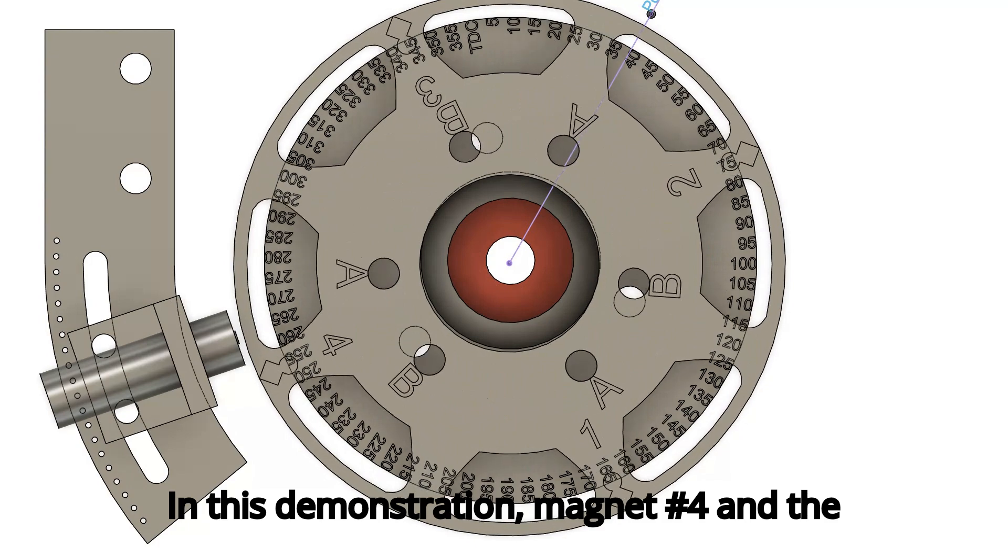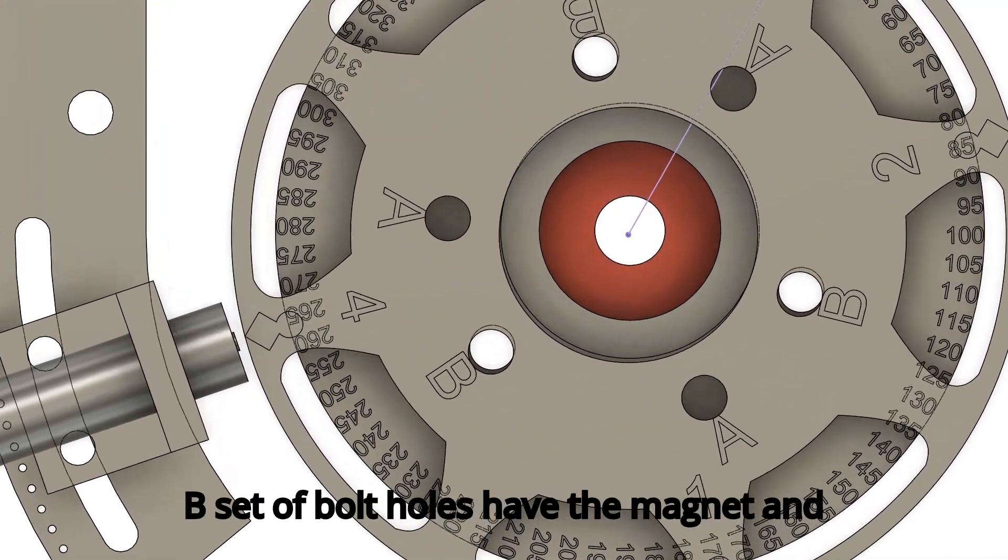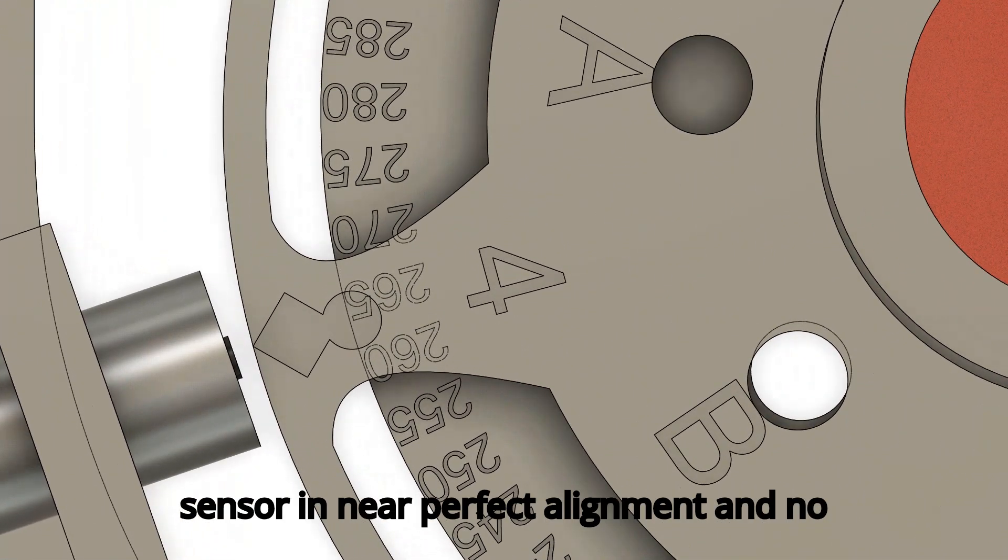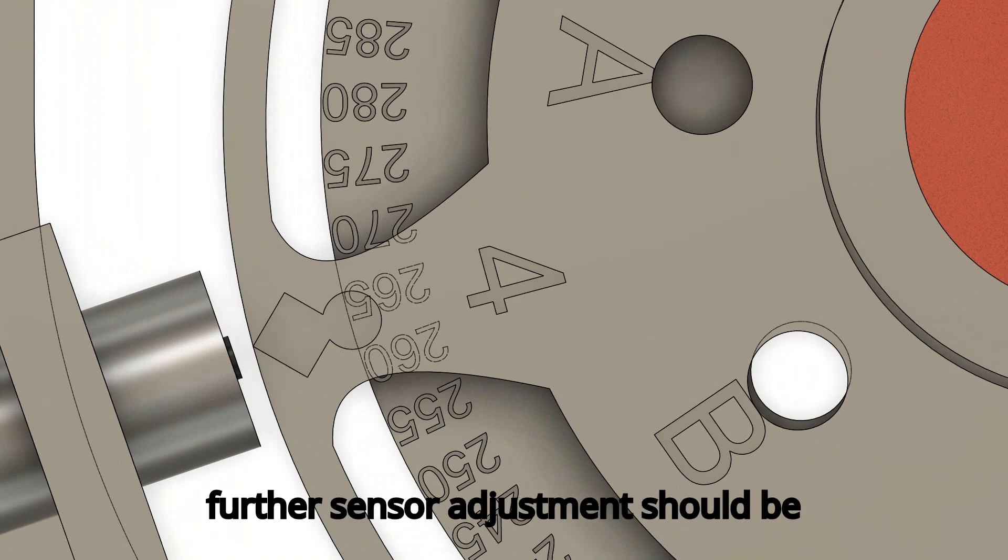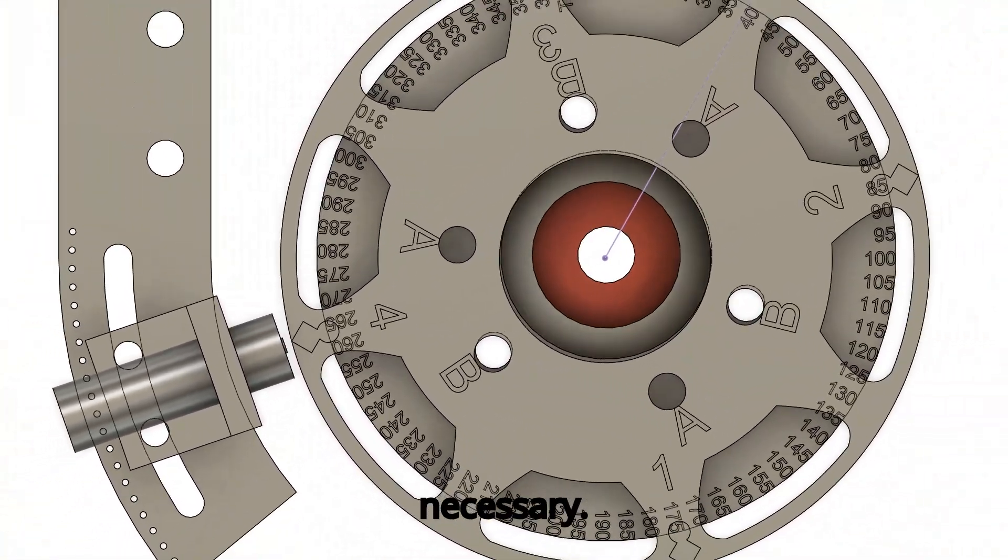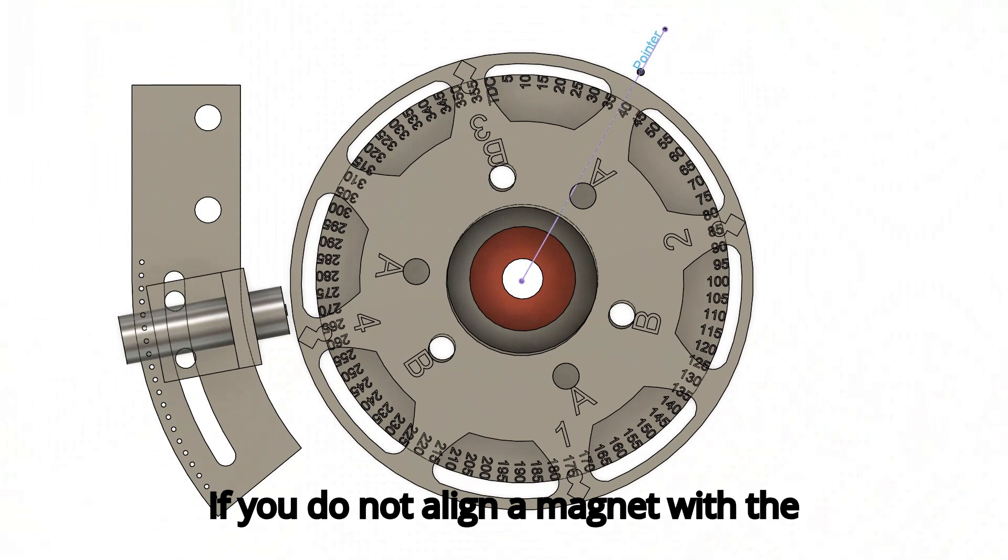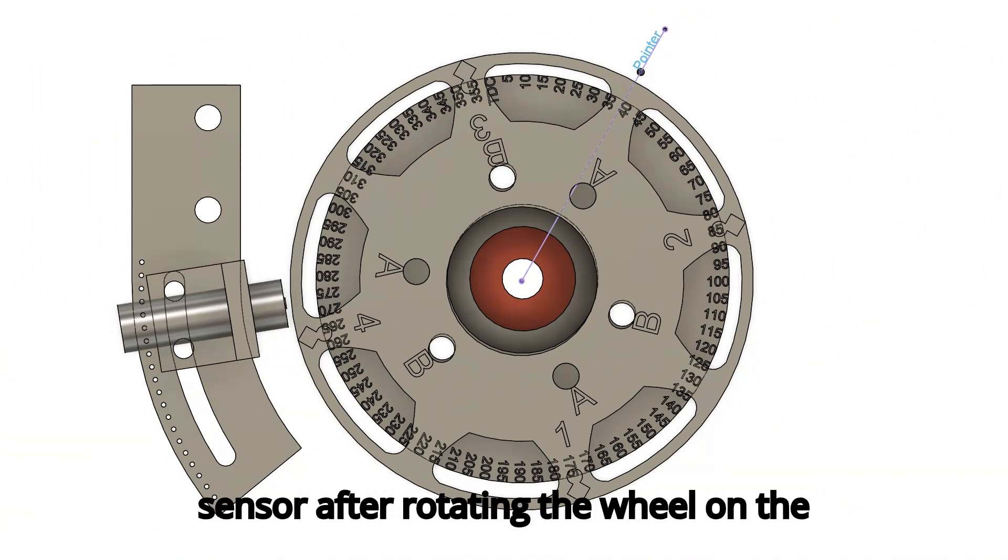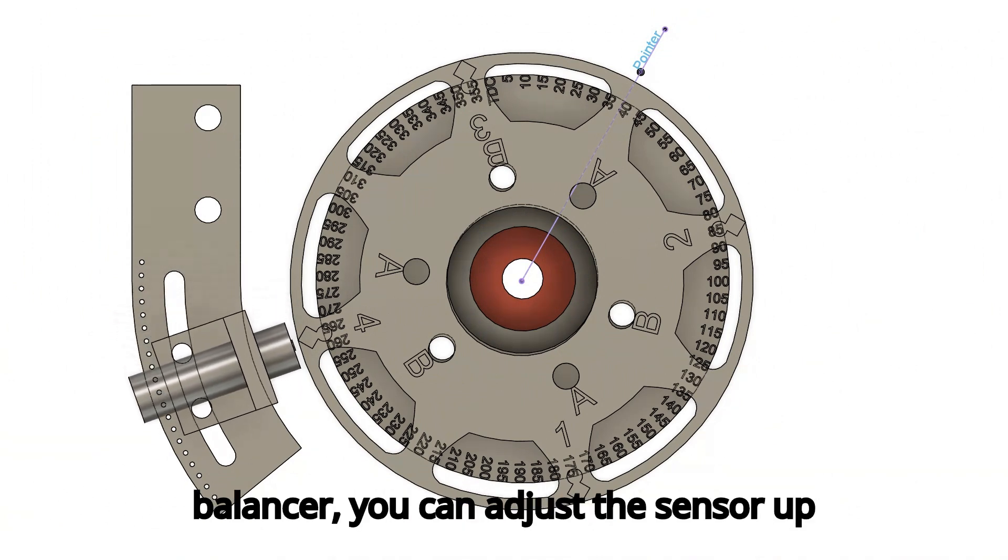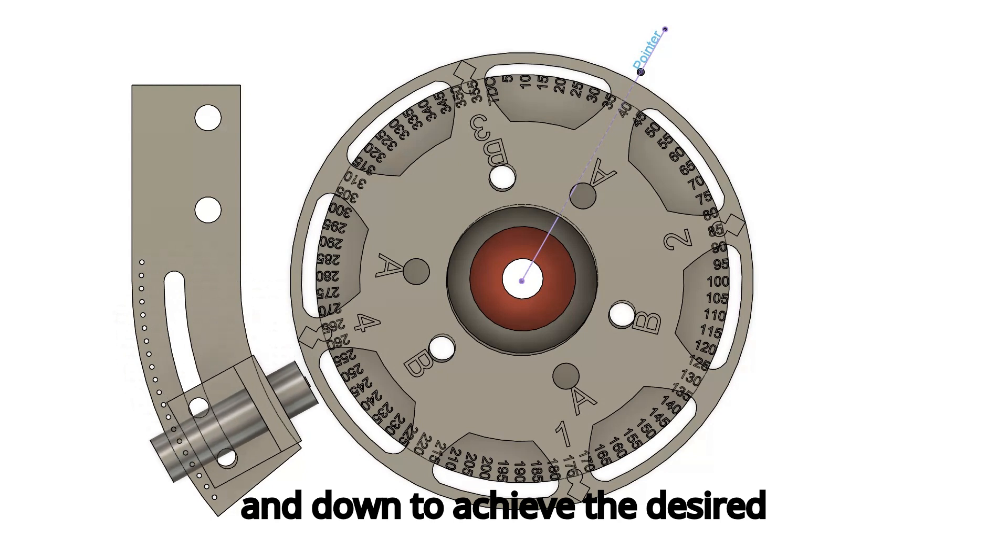In this demonstration, magnet number four and the B set of bolt holes have the magnet and sensor in near-perfect alignment and no further sensor adjustment should be necessary. If you do not align a magnet with the sensor after rotating the wheel on the balancer, you can adjust the sensor up and down to achieve the desired alignment.